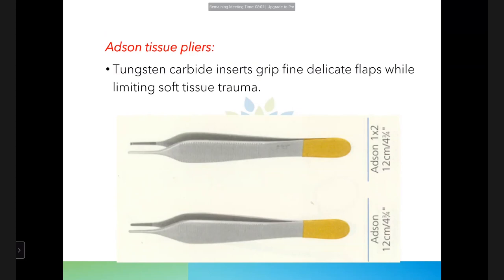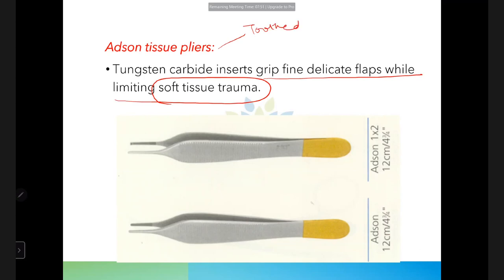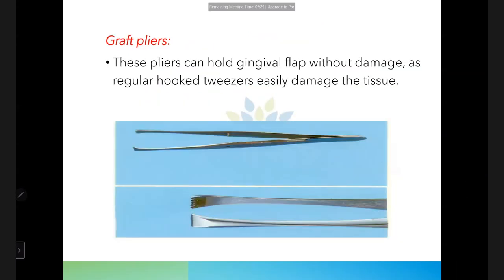Adson tissue pliers (tissue forceps) are used to grip fine, delicate flaps while limiting soft tissue trauma. They come in two types: tooth and non-tooth. The toothed type has a tooth-like beak, whereas the non-tooth type has a plain edge.